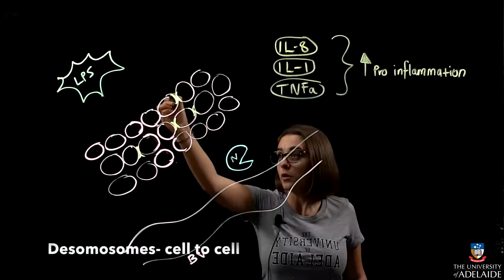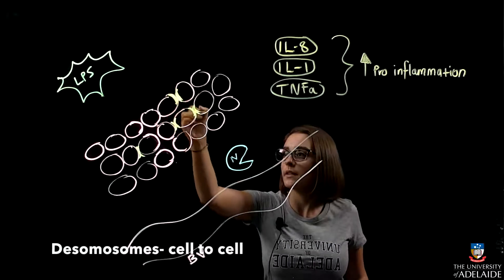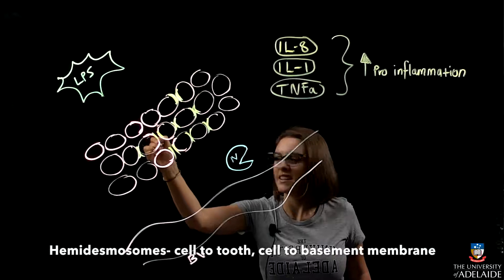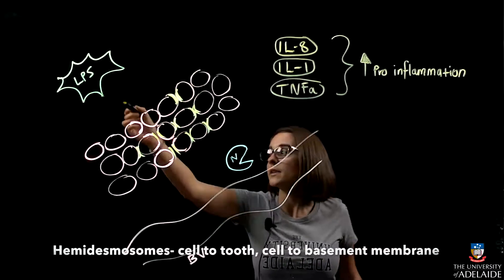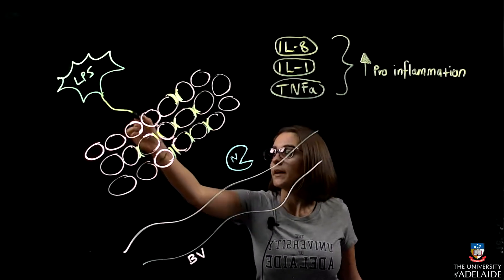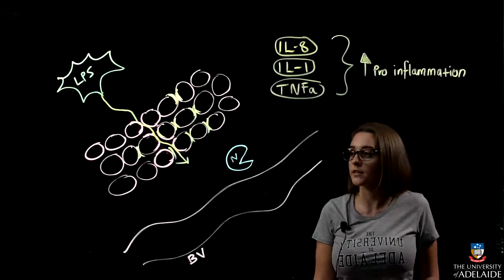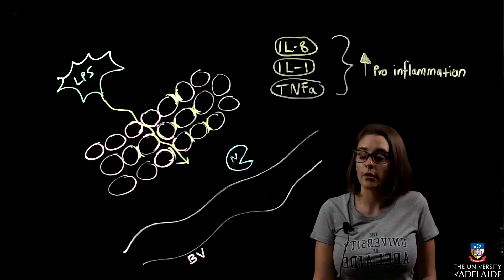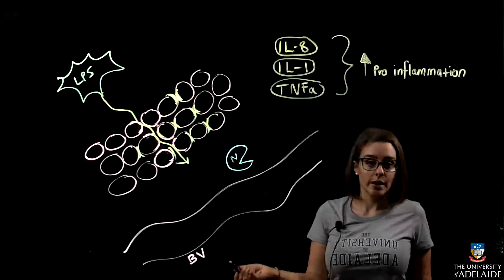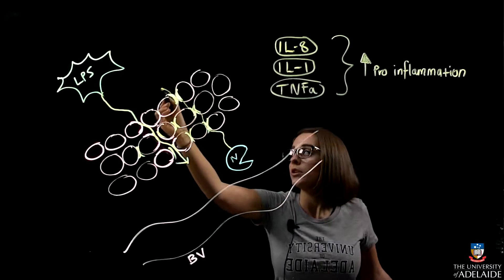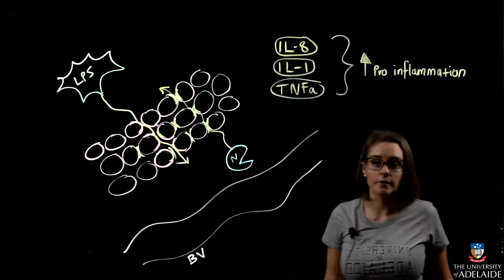As we said before, the structure of the junctional epithelium is connected by hemidesmosomes. These are semi-permeable desmosomes which allow LPS to transmigrate through the junctional epithelium, which is not good. This drives pathogenesis. However, the main aim of these hemidesmosomes is to allow immune cells such as neutrophils to go back through the junctional epithelium and fight the invasion.